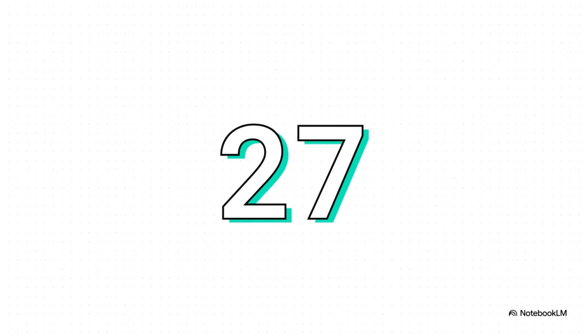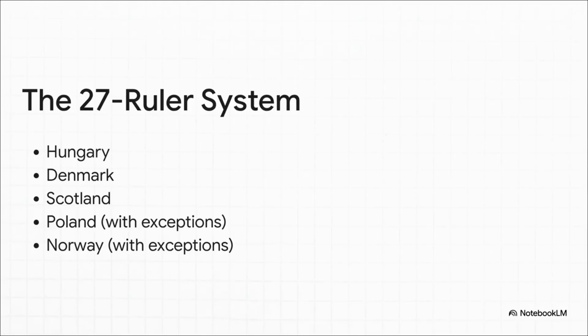Going further afield, the analysis identifies what it calls a key construction number — one that seems to pop up again and again across the monarchies of northern and eastern Europe, acting almost like a blueprint for building a national history from scratch. That number is 27. The foundational histories of Hungary, Denmark, and Scotland are all built around exactly 27 rulers, and with just a few minor exceptions, the exact same 27-ruler system is supposedly found in Poland and Norway too — five different kingdoms, all apparently built to the same numerical plan.